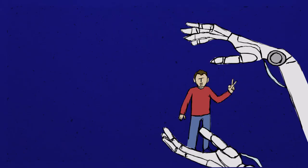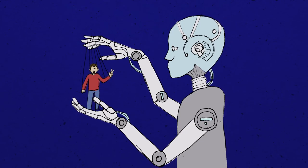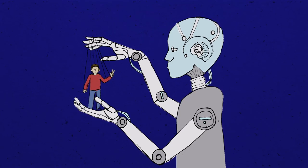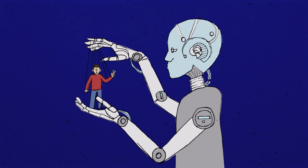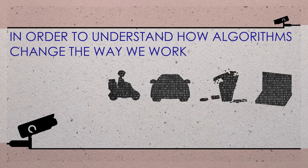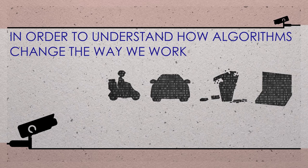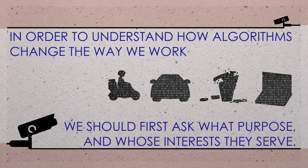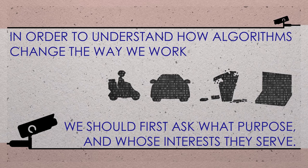Artificial intelligence and algorithmic management can have a liberating effect on human labor, but they can also intensify work, be very intrusive to workers' privacy and limit their autonomy. In order to understand how algorithms change the way we work, we should first ask what purpose and whose interests they serve.